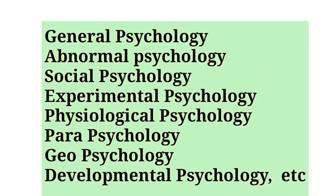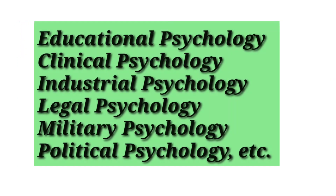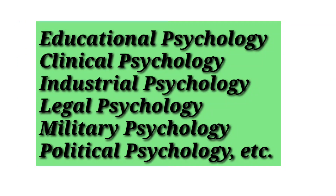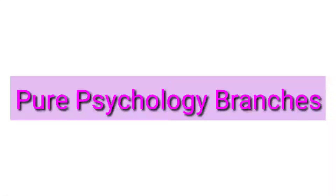Some examples of pure psychology branches include: general psychology, abnormal psychology, social psychology, experimental psychology, physiological psychology, parapsychology, geopsychology, and developmental psychology. Different branches of applied psychology include: educational psychology, clinical psychology, industrial psychology, legal psychology, military psychology, and political psychology.